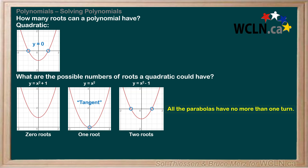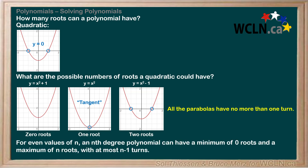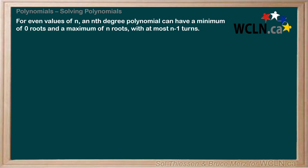This extends to all even degree polynomials. That is to say, for even values of n, an nth degree polynomial can have a minimum of zero roots and a maximum of n roots, with at most n minus 1 turns. Let's carry this over to a new slide and look at an example.